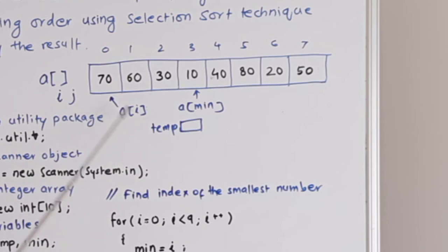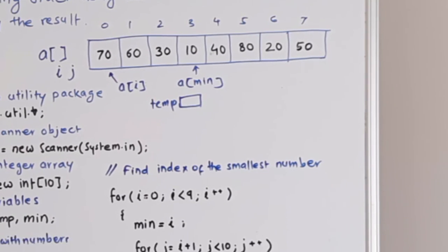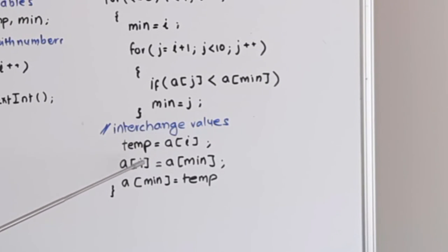Then we will copy the value of ai into temp. Then ai is free. Then we can copy the value of amin in this cell. After that we will shift the value in temp in this cell. This way we will be interchanging the values of these two cells using a temporary variable named temp. temp equals to ai, ai equals to amin, amin equals to temp. This way the interchanging completes.